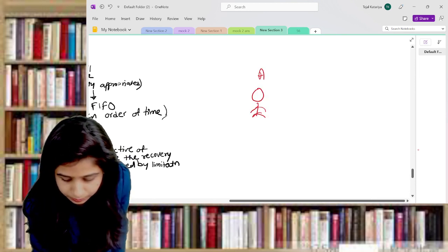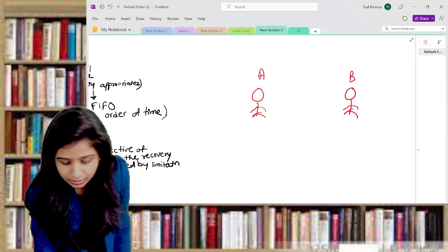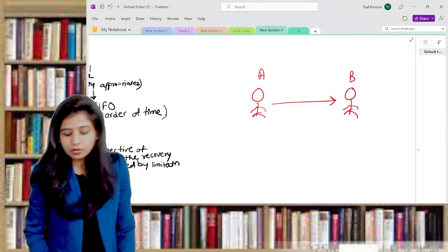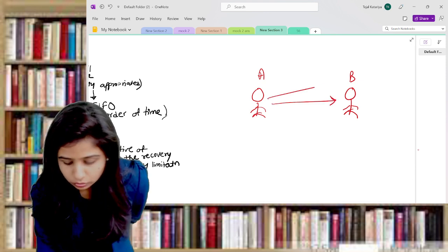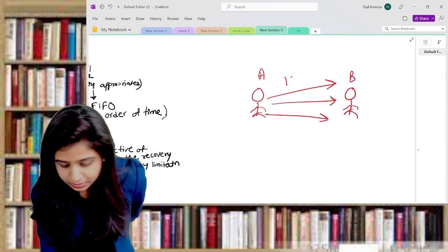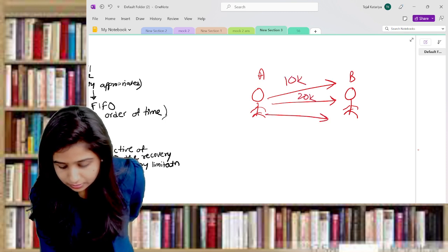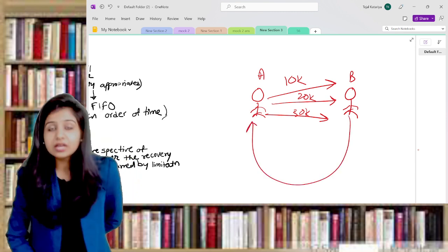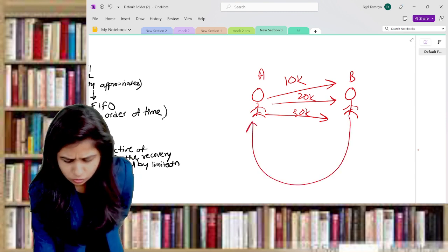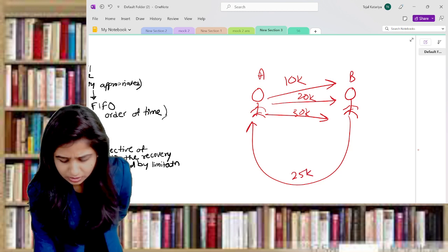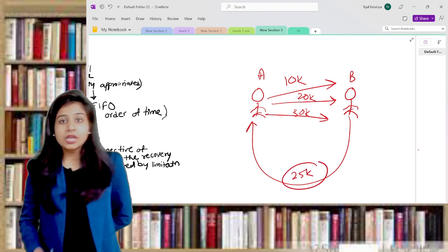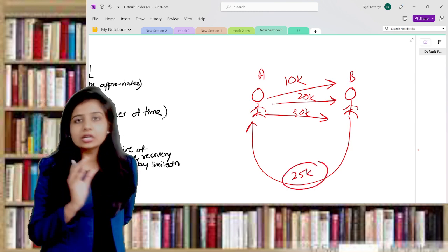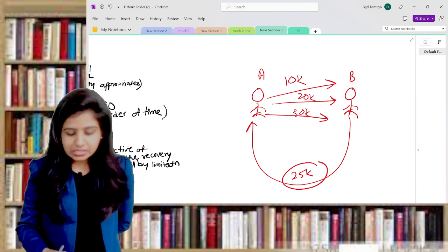If there is A and B, A has given B a lot of loans - maybe 10k, 20k, 30k. Now whenever B will make a payment to A, let's assume B is making payment of rupees 25,000.